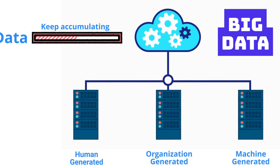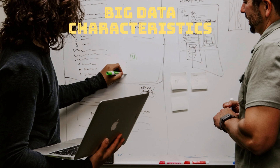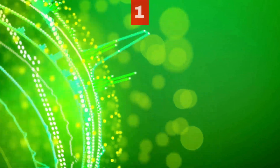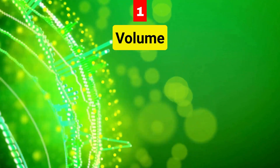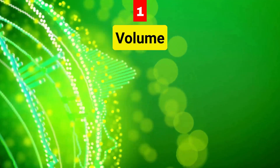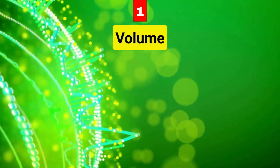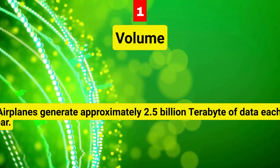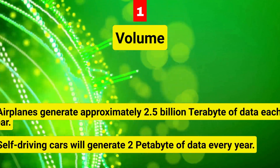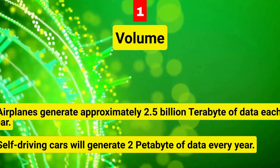Big data can be described by the following three characteristics. Number one is volume, which refers to the amount of data. The amount of data in the world is doubling every two years. By 2025, we will have around 80 times the amount of data as we had in 2011. The sheer volume is enormous, and a very large contributor to the ever-expanding digital universe is the Internet of Things, with sensors all over the world creating data every second. Airplanes generate approximately 2.5 billion terabytes of data each year from sensors installed in the engines. Self-driving cars will generate 2 petabytes of data every year.